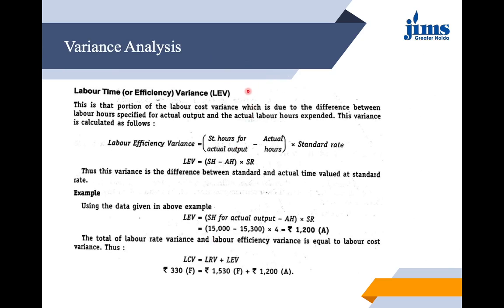Labor Time or Efficiency Variance is that portion of labor cost variance which is due to the difference between labor hours specified for actual output and the actual labor hours expended. The formula is: (Standard Hours for Actual Output minus Actual Hours) into Standard Rate. Using the previous example, standard hours are 15,000, actual is 15,300, and rate is 4 — giving an adverse variance of 1,200 rupees. You can verify that labor rate variance and labor efficiency variance sum up to give the labor cost variance.